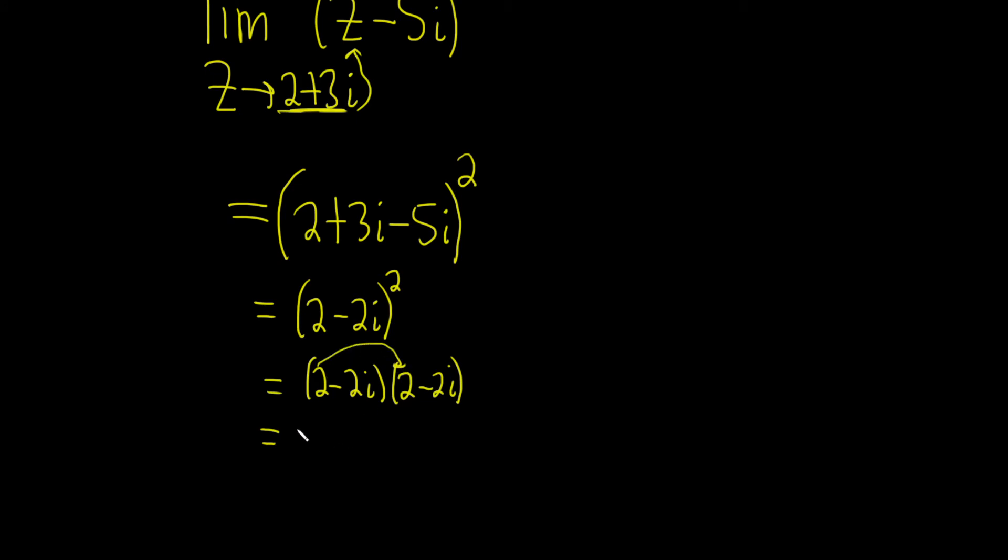2 times 2 is going to give us a 4, and then 2 times minus 2i will give us minus 4i. Then we do the inside piece, it's going to give us minus 4i.